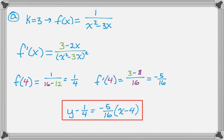So I get y minus 1/4 is negative 5/16, the quantity x minus 4. That's part A. Okay, so let's move on, where we have changed k to 4, and change what we need to do.